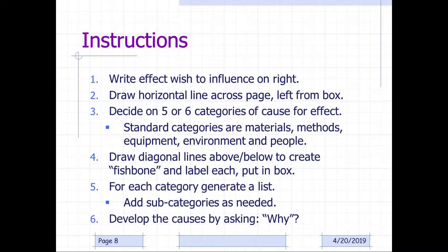Here are the instructions. You write the effect wished to influence on the right. You draw horizontal lines across the page, left from the box, and you decide on five or six categories of cause for the effect. Standard categories are materials, methods, equipment, environment, and people. You draw diagonal lines above and below to create the fishbone and label each to put in a box. For each category, generate a list and subcategories as needed. Develop the causes by asking the simple question, why?